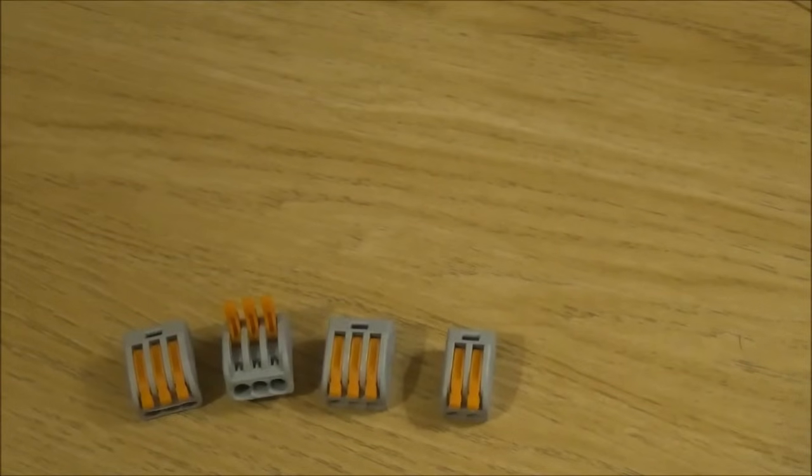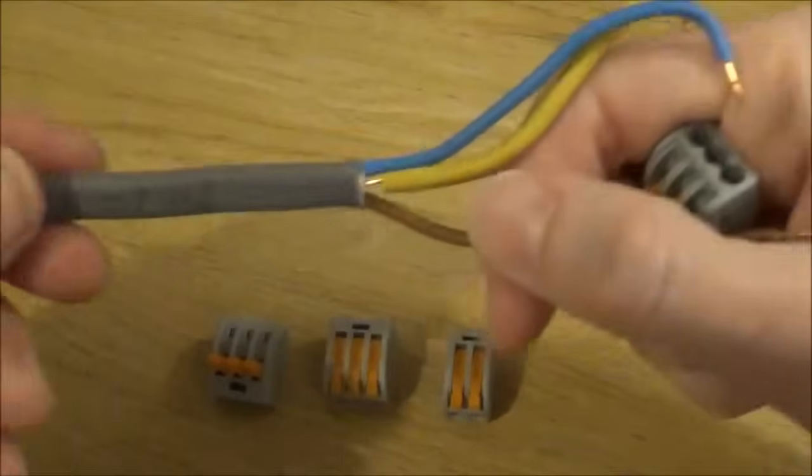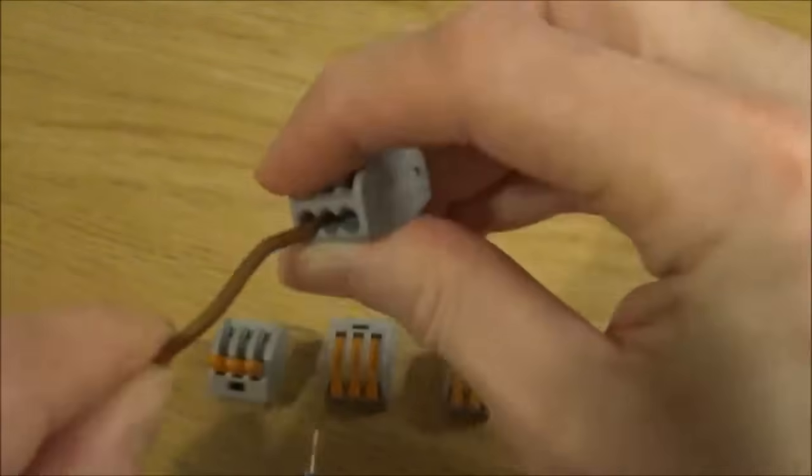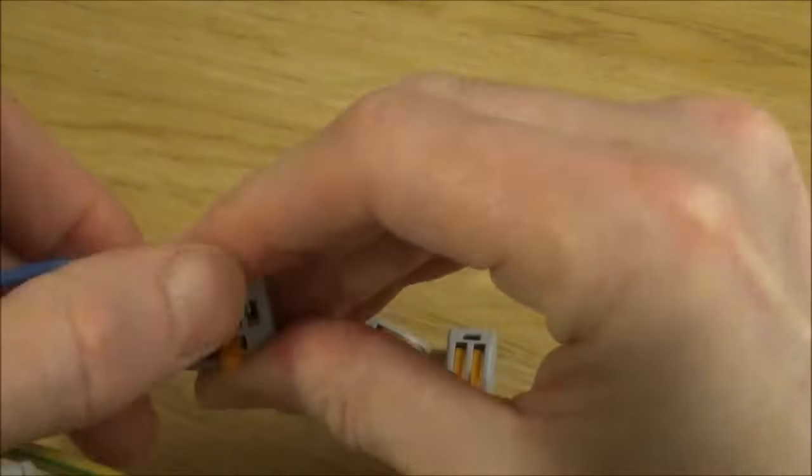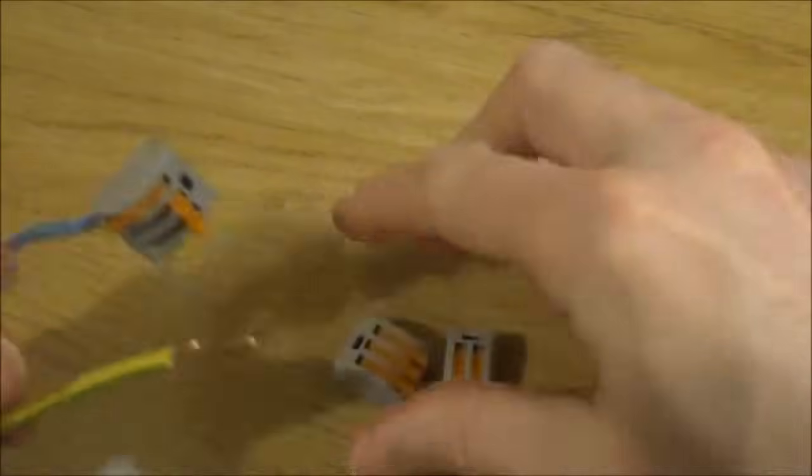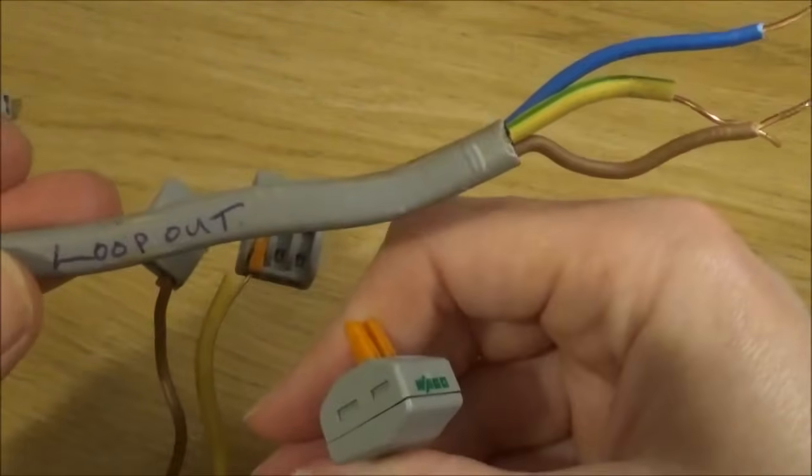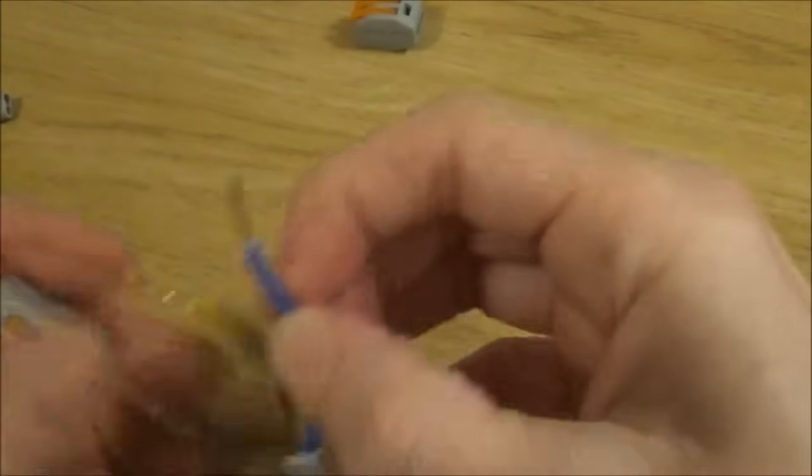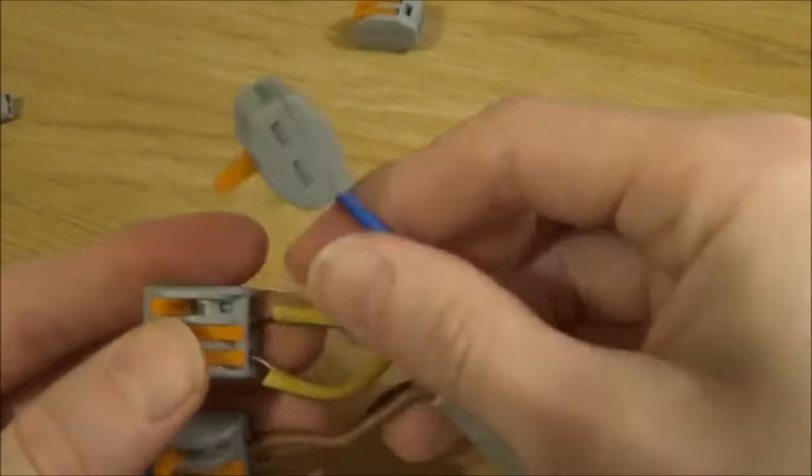These connector blocks are extremely useful when doing lighting circuits. If we treat this as a mock setup for a ceiling light, if we take what I've labeled as my loop in you can put your live into there, your neutral into the next connector block and the earth into the earth connector block. You can then take your loop out, connect the live to the live, connect the neutral to the neutral, and connect the earth to the earth.